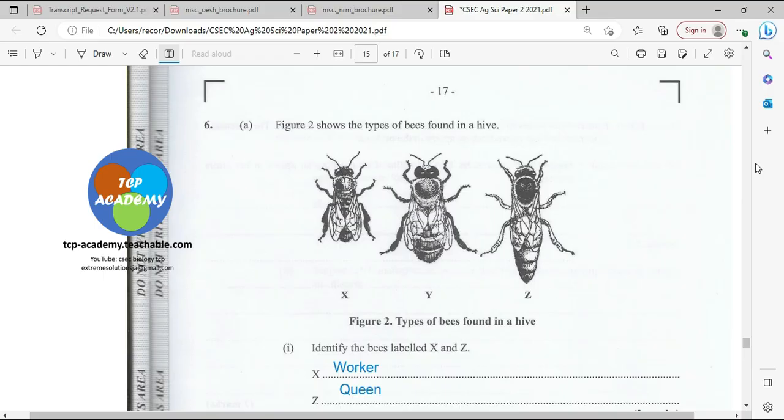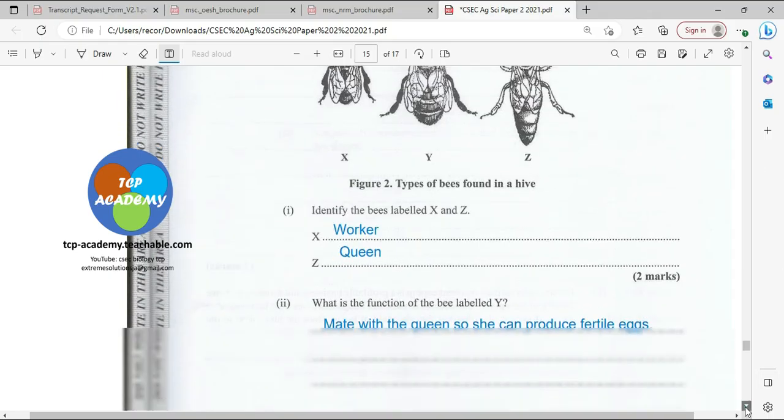Let's move right into question number six. Figure two shows three types of bee found in hive: we have X, Y, and Z. Usually the smallest is the worker. The drone is usually the one that falls in between, and it really stands out because it's fatter than the others. The queen is usually easily identified because it's slender, long, and pretty much fits. So Z here is going to be the worker, Y is the drone, and X of course is going to be the queen.